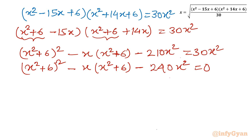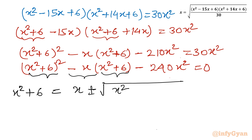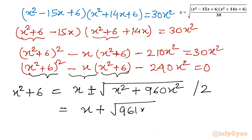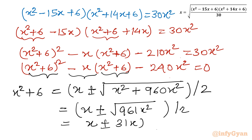Now I will apply the Sridharacharya (quadratic) formula, treating (x² + 6) as the variable. So x² + 6 = [x ± √(x² + 4·240x²)] / 2 = [x ± √(961x²)] / 2. Since √961 = 31, this gives (x ± 31x) / 2.